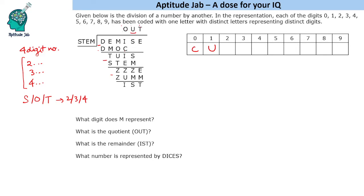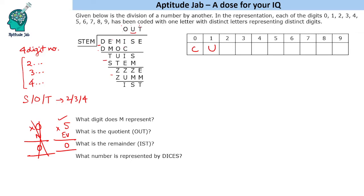Now, C is 0 — how can we get 0 as the last digit? Zero comes as a last digit when we multiply some digit by 0, or when we multiply 5 by an even digit. Since neither M nor O is 0 (because C is 0), we use the second case: 5 times an even digit gives 0. Since O, S, and T cannot be 5, M must be 5.